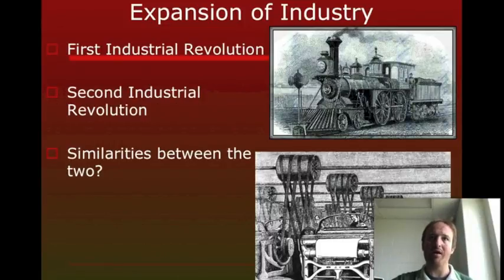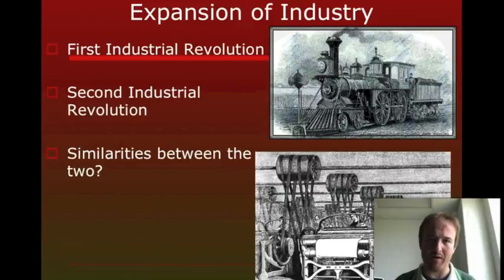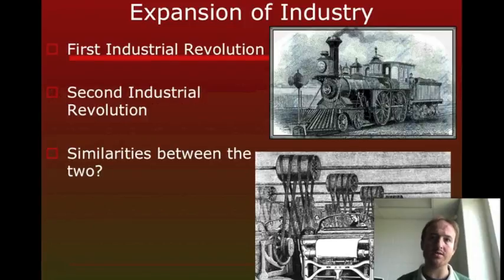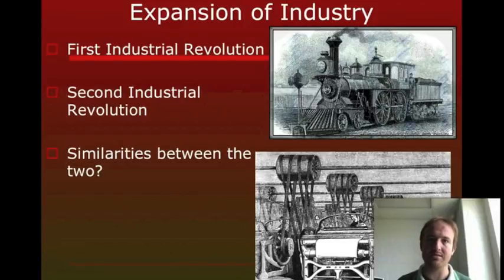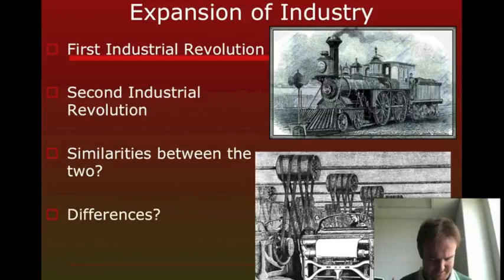One similarity between the two revolutions is the secondary revolutions that the Industrial Revolution creates. The Industrial Revolution creates the Market Revolution, where people are no longer selling just in a small local area but selling goods across the region or even nationally — much like we see globally today. We also get the Transportation Revolution, and because of the Bessemer process we end up with steel, which allows us to build things like railroads.